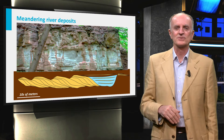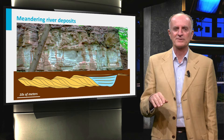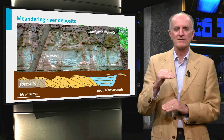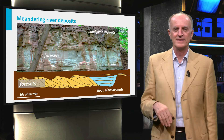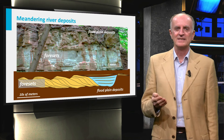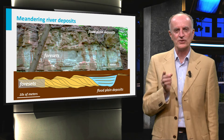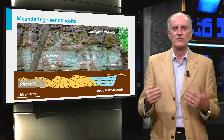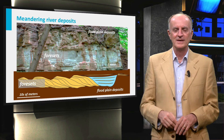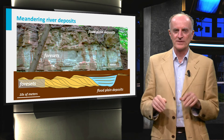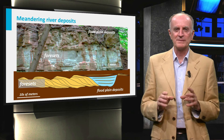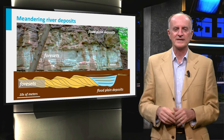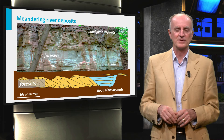Sedimentary successions associated with meandering rivers are characterized by large bodies of sands within finer grained and more regular floodplain successions. The internal structure of the sand is characterized by foreset beds, which are non-horizontal layers dipping towards the deeper part of the former river bed. Because of their high sand content and associated high porosity and permeability, meandering river deposits are very interesting targets for water and hydrocarbon exploration.